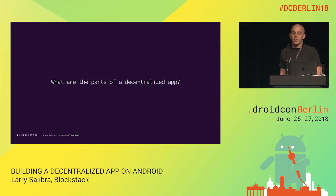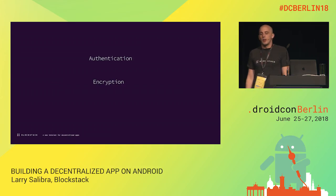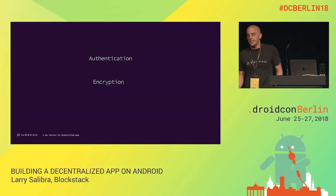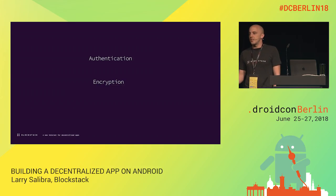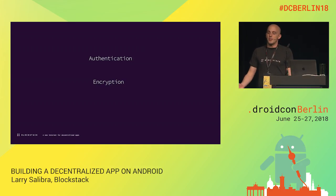Blockstack hides all of this complexity — storage, identity, naming, and blockchain transactions — from developers, and gives you a really nice API on Android, iOS, and JavaScript. There are three main parts of a decentralized app: authentication, the ability to prove who a user is on the network; encryption, using an app-specific private key to store data that only the user can read; and storage, where the user controls where data is stored and your app doesn't have to hold it if it's only running on the client device.